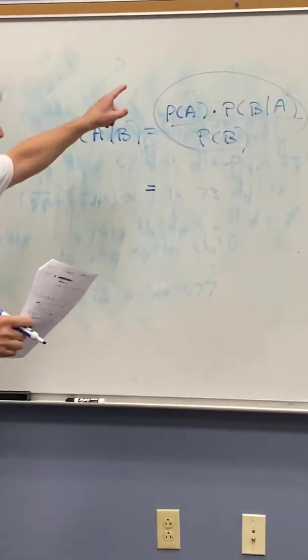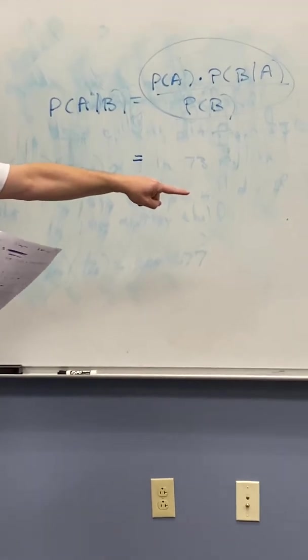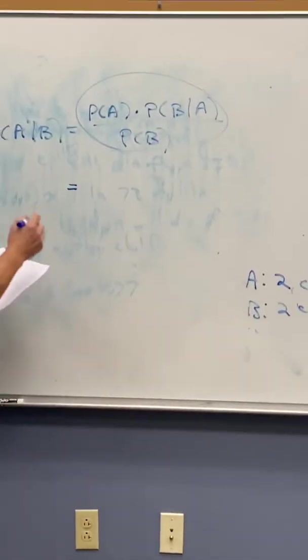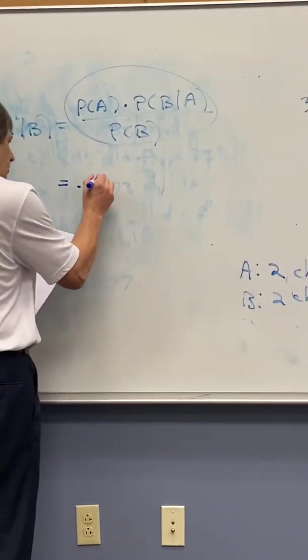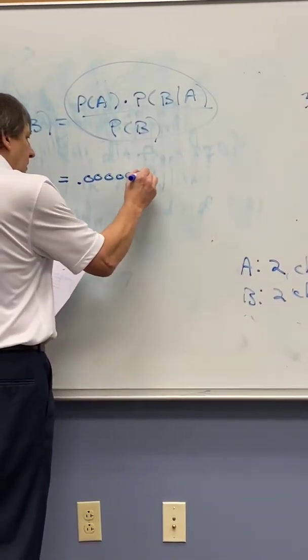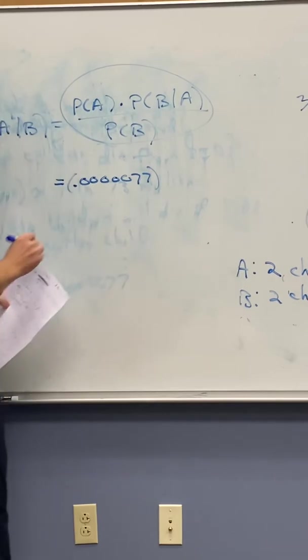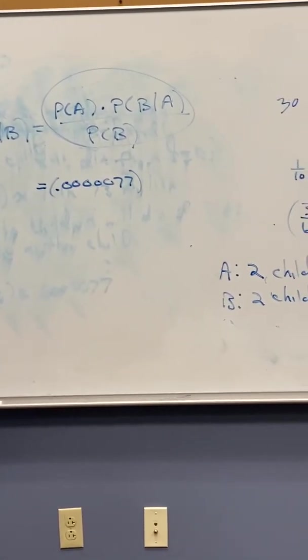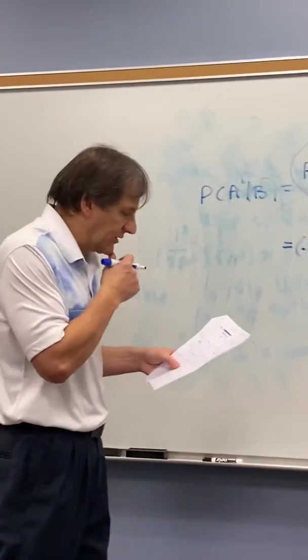Probability of A. What's the probability that two children die from SIDS? Well, we answered that earlier, right? It was on the board here. I'll write it again. It's 0.000077. That's the probability we established earlier that two children will die from SIDS.